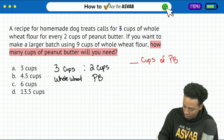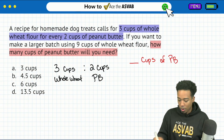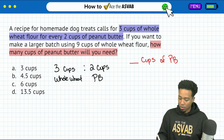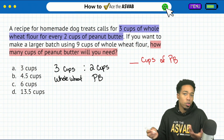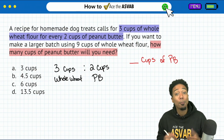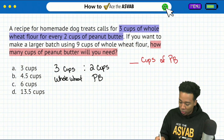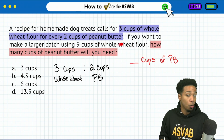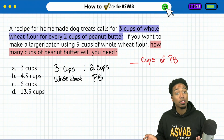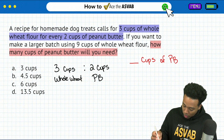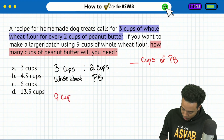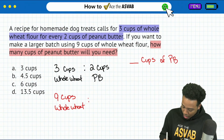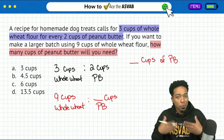Let's highlight where that came from. This is another way to write a ratio — we can say three cups to two cups, or write the word 'to', or write it as a fraction. All of them are just the same. Now that we have that comparison, we have one more bit of information: if you want to make a larger batch using nine cups of whole wheat flour, how many cups of peanut butter will you need? Let's write this down — if we use nine cups of whole wheat, then how many cups of peanut butter will we need?